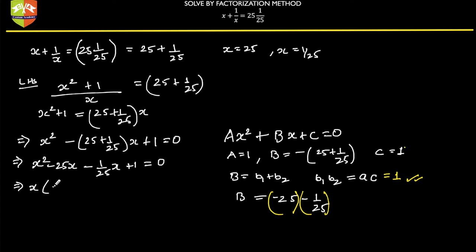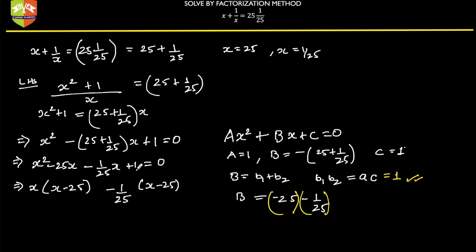Now we take common terms. From the first two terms, x is common, giving x times x minus 25. For the last two terms, minus 1 by 25 is common: minus 1 by 25 times x gives minus 1 by 25 x, and minus 1 by 25 times minus 25 gives plus 1. So the factorization is correct, giving us x minus 25 times x minus 1 by 25 equals 0.